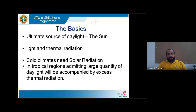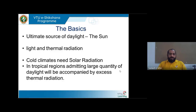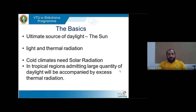In tropical, warm, hot-humid places, solar radiation is abundantly available — much more than in polar or cold regions. Along with sunlight we also get a lot of thermal radiation, which is not preferred for tropical climates. Hence we need to use daylight in such a way that we use only the diffused or reflected light, getting only the lighting aspect without bringing heat inside the building.